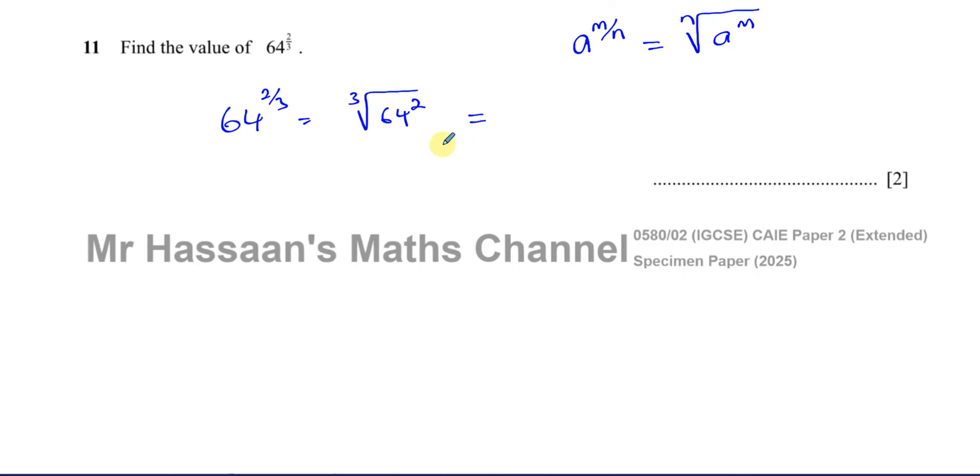We should know our cube numbers and square numbers. So the cube root of 64, you should know that this is 4, which gives us 4 squared, and we should know 4 squared is equal to 16. So the answer is 16.